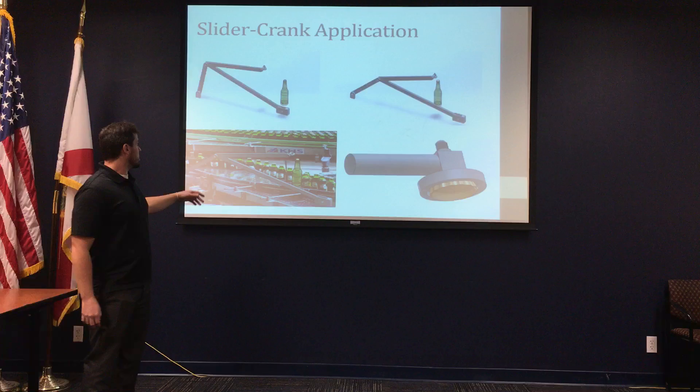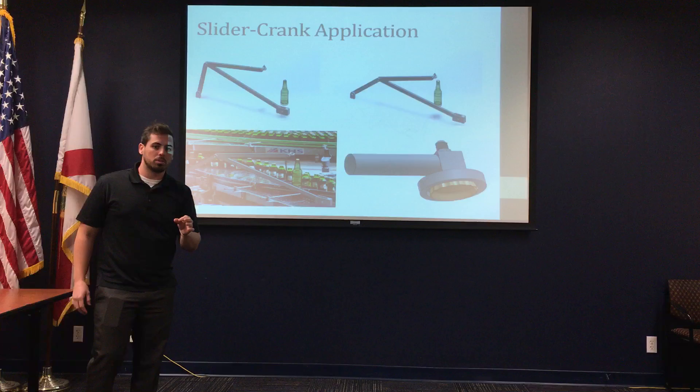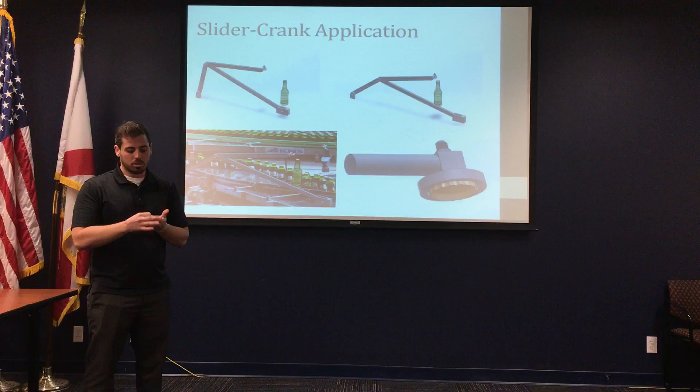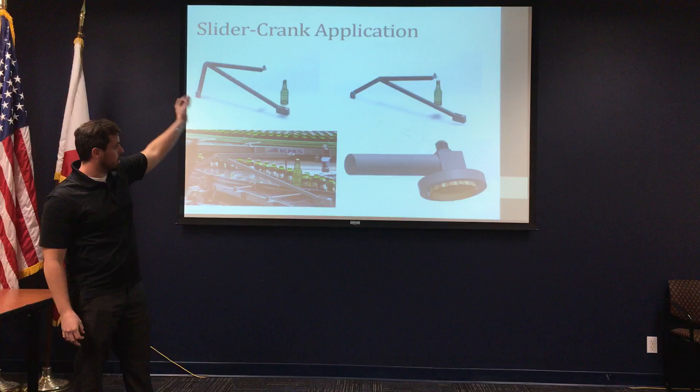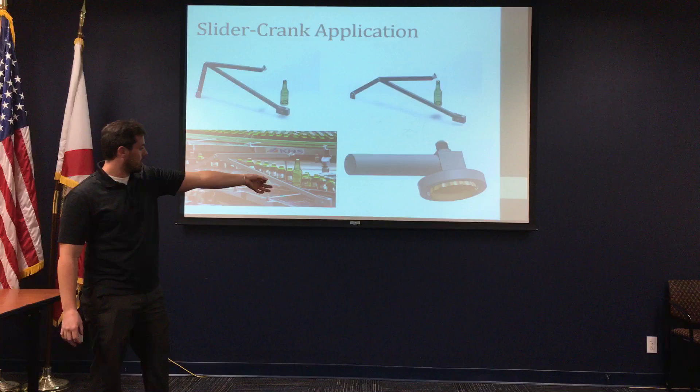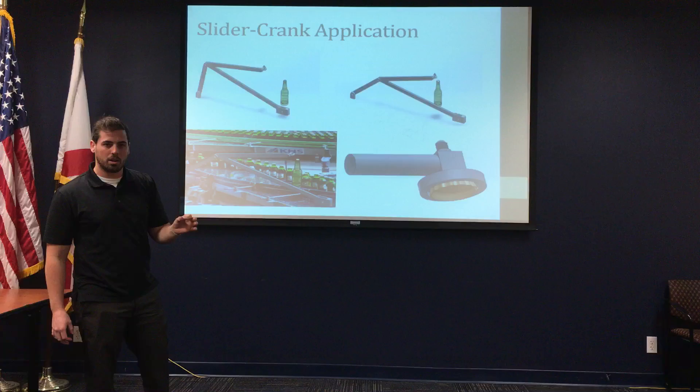The application we chose for our slider crank is in a bottling factory. We chose to have the mechanism grab a bottle cap and place it onto a beer bottle. On the top left, it shows the approach towards a beer bottle with an adapter at the top that has a vacuum-sealed section that holds a cap, collects it, retrieves it from an area, and places it onto the bottle. This is the adapter — it would be stuck onto the bottom with a vacuum and then press-fitted onto the beer bottle itself.